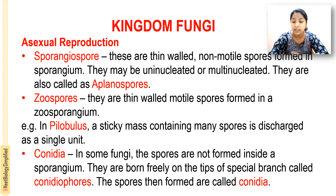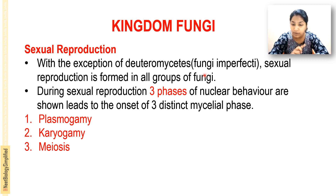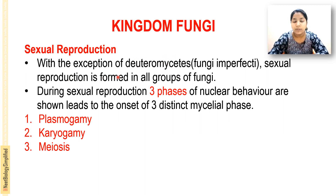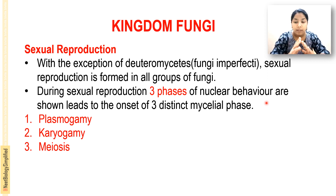Next is sexual reproduction. With the exception of Deuteromycetes — the imperfect fungi — sexual reproduction is found in all groups. All other groups of fungi can reproduce sexually. During sexual reproduction, three phases of nuclear behavior are shown, leading to the onset of three distinct mycelial phases.